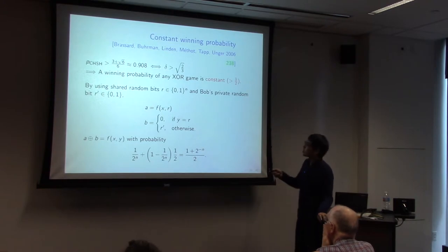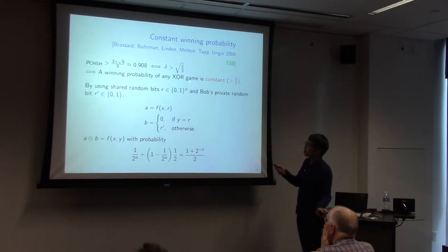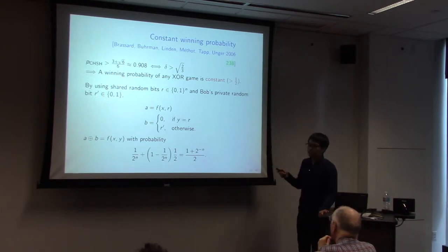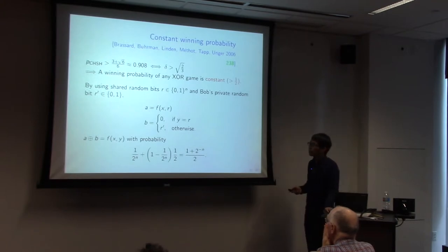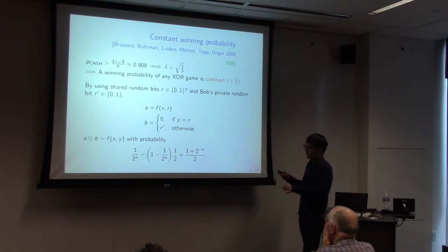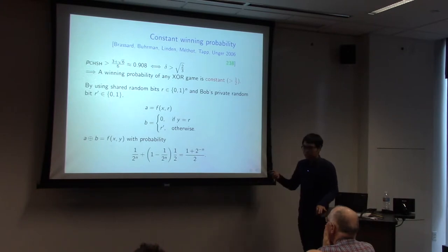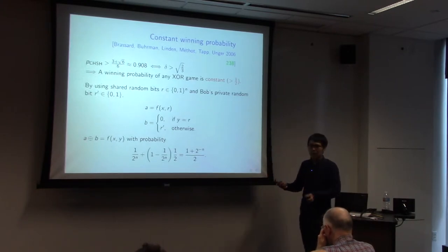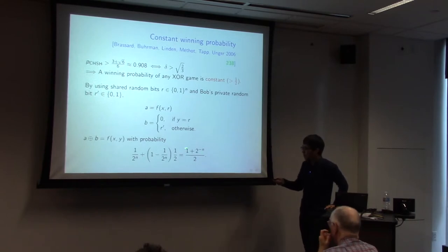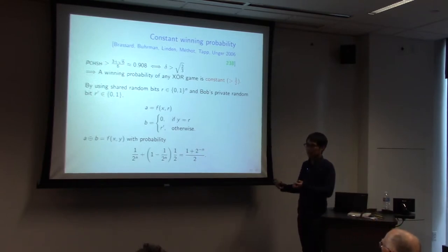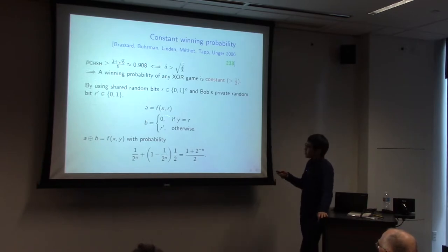The result is: if CHSH probability is greater than 0.908 (corresponding to CHSH bias √(2/3)), then the winning probability of any XOR game is a constant strictly greater than 1/2. This means 1-bit communication allows computation of F with probability strictly greater than 1/2, which is also implausible. The idea is: first obtain very small bias 2^(−n) using a very simple protocol, then amplify this bias to a constant.